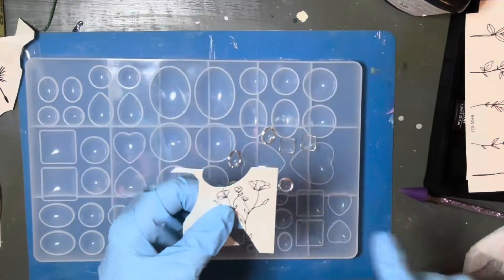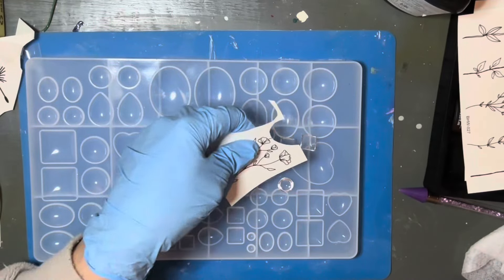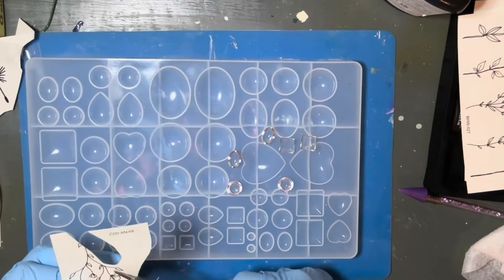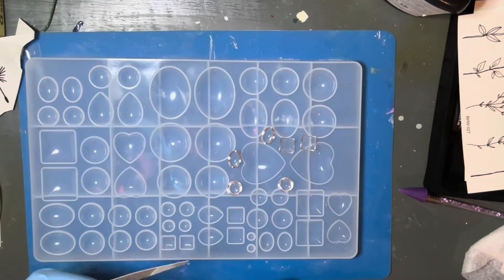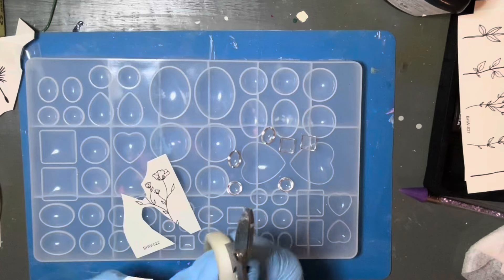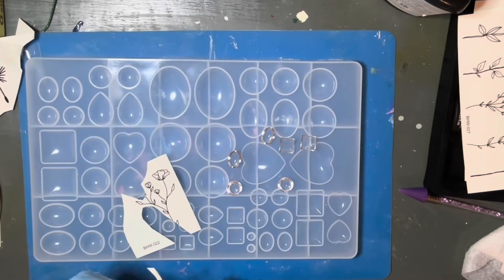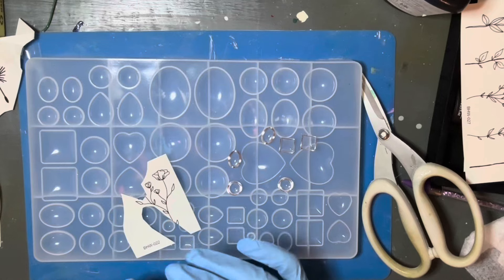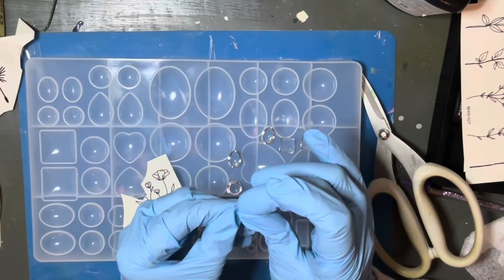My plan is I've got these temporary tattoos and I'm going to cut them out into a size where they'll fit on the back of the cabochon and then I'm going to actually put some nail polish over the back of that so that you'll be able to see the tattoo through the nail polish.